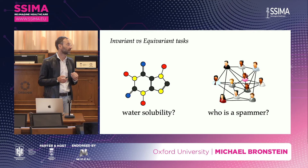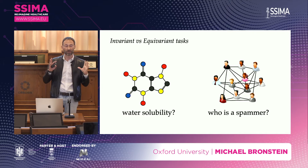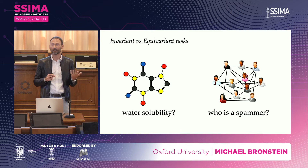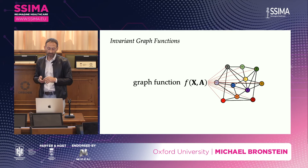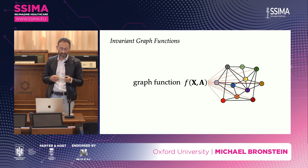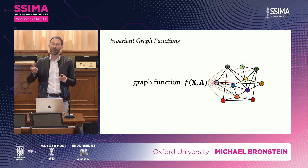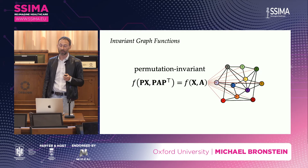Two typical tasks in learning on graphs are graph-wise tasks — for example, predicting a chemical property of a molecule modeled as a graph, such as how soluble it is in water — and node-wise tasks, for example finding spammers in a social network. For graph-wise tasks we want permutation invariant functions: no matter how we permute the input, the result will be the same. For node-wise tasks we want permutation equivariant functions: if I permute the input, the output should be permuted in the same way.